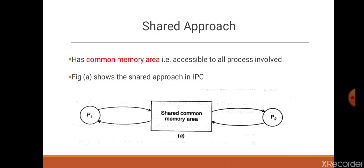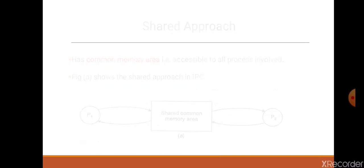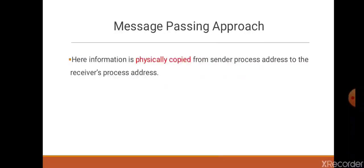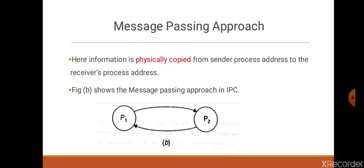Second approach is message passing approach. Here, information which is to be shared is physically copied from sender process address space to the receiver's process address space. This is mainly done by transferring the data in the form of messages, so it is called message passing. Figure B shows the message passing approach in IPC. Here there are two processes, P1 and P2, which are communicating with each other.